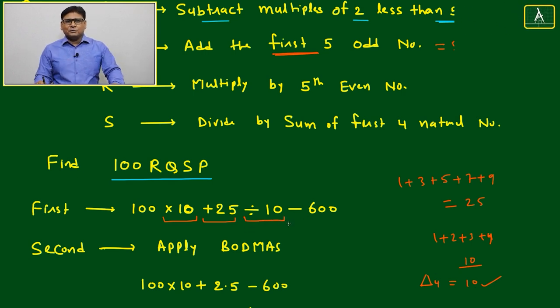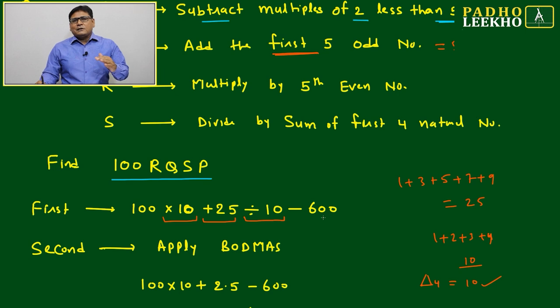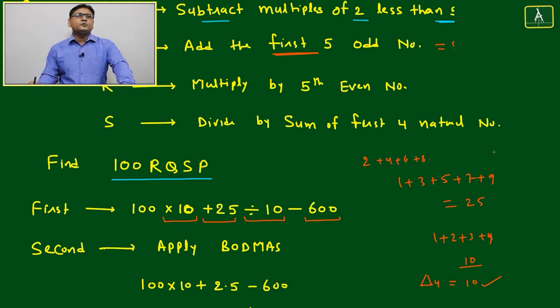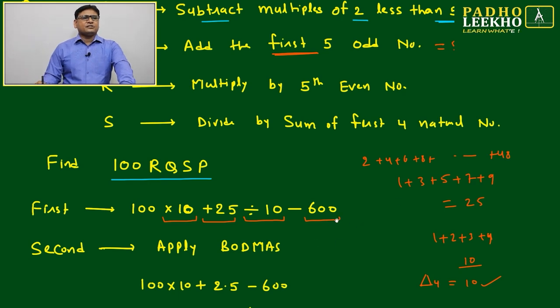All these you are now much expert. Your level is much much higher than whatever you are expecting from yourself and whatever question can expect from you. Next is your P, and P subtract multiples of 2 less than 50. It will become 600. You have to add 2 plus 4 plus 6 plus 8 up to 48. Just add, you will get the 600.